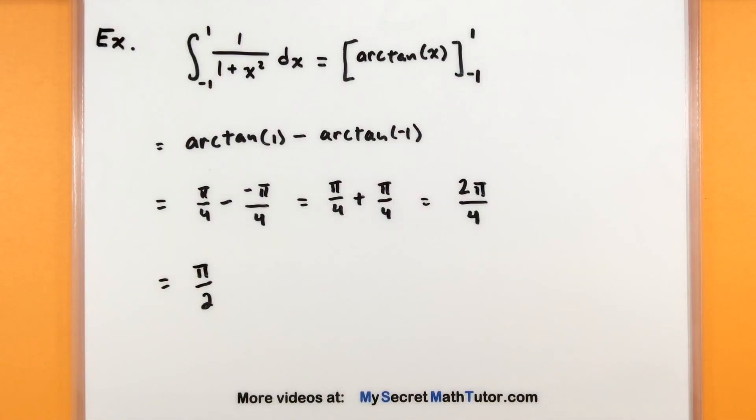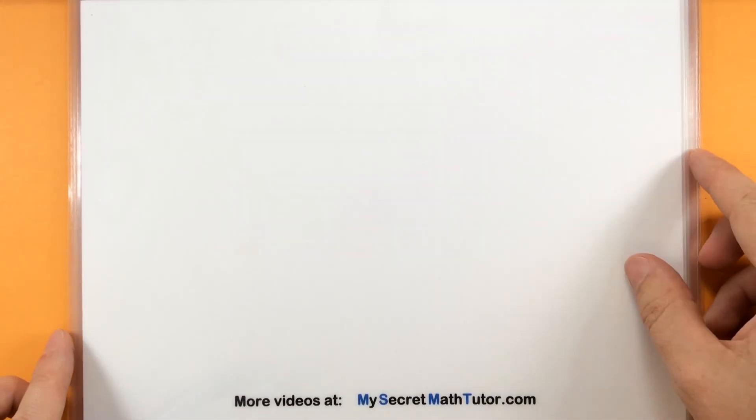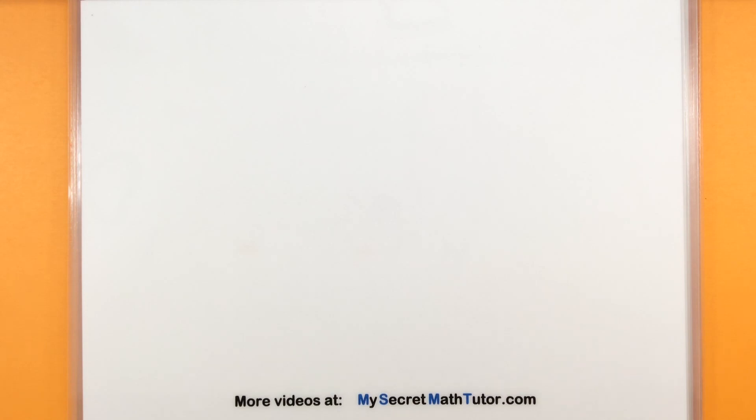So you can see doing definite integrals is not so bad. You really just have to find the antiderivative, and then plug in your bounds, starting with the top and the bottom, subtract the two. Thanks for watching, and if you'd like to see some more videos, definitely visit mysecretmathtutor.com.